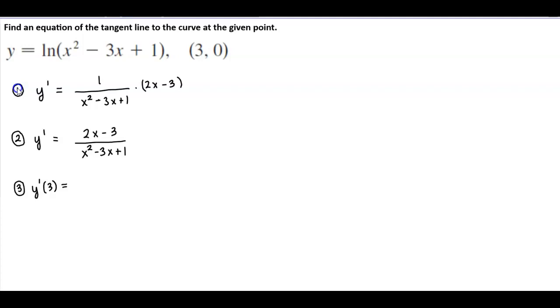So we're going to plug that in. And so we have 2 times 3 minus 3 over 3 squared minus 3 times 3 plus 1. And so we get 6 minus 3, which is 3. We get 9 minus 9, which is 0 plus 1 is 1. And so that's equal to 3.